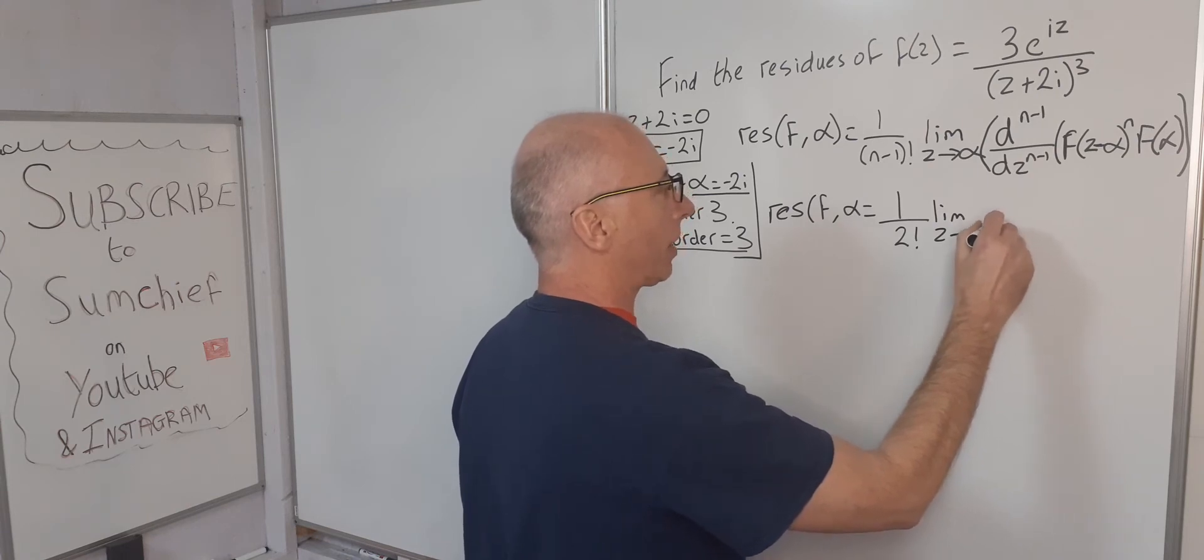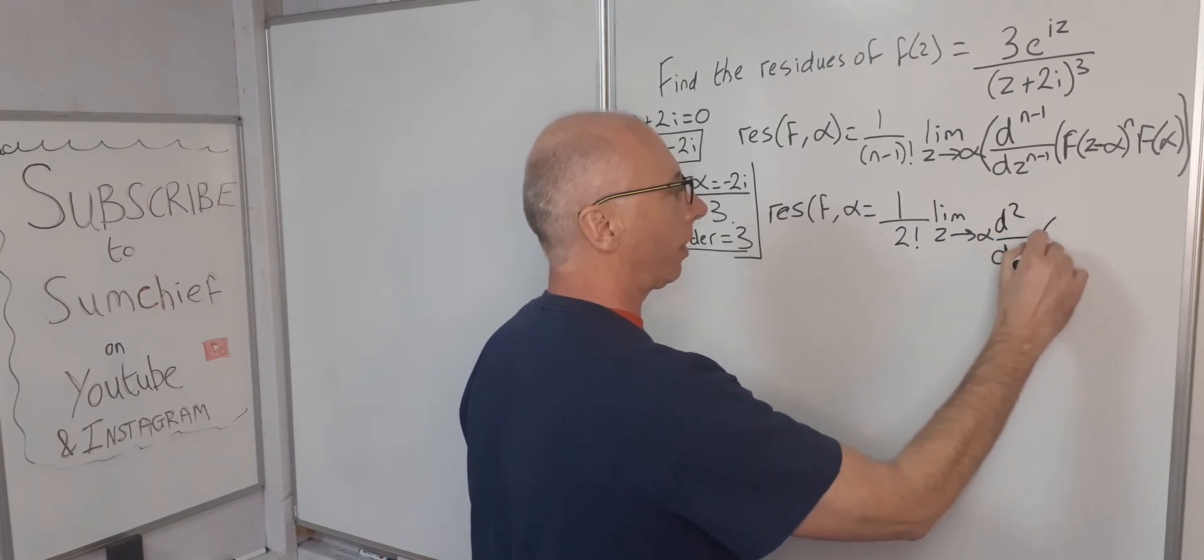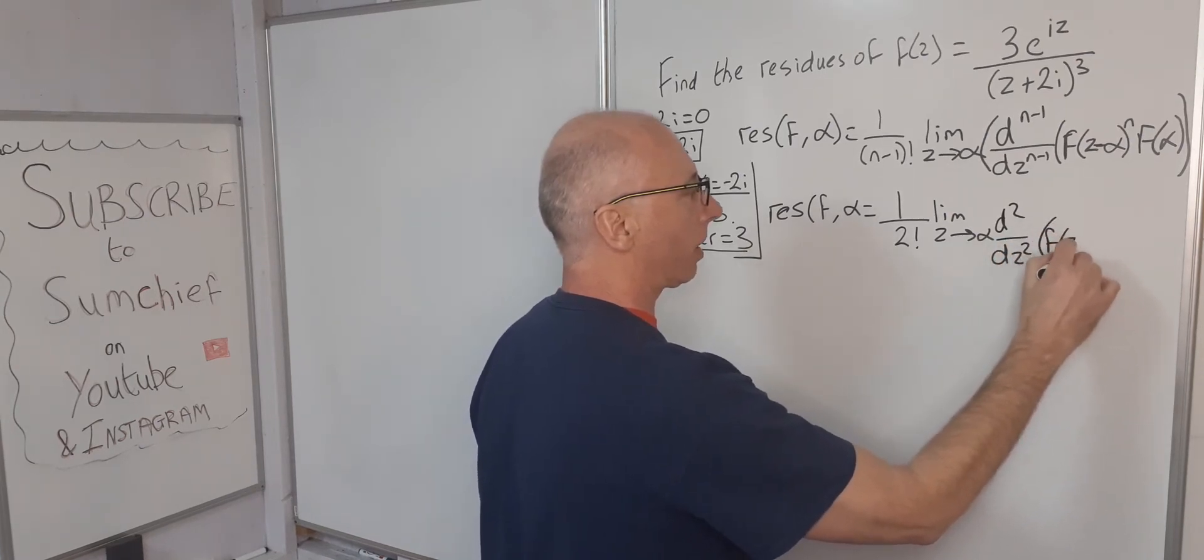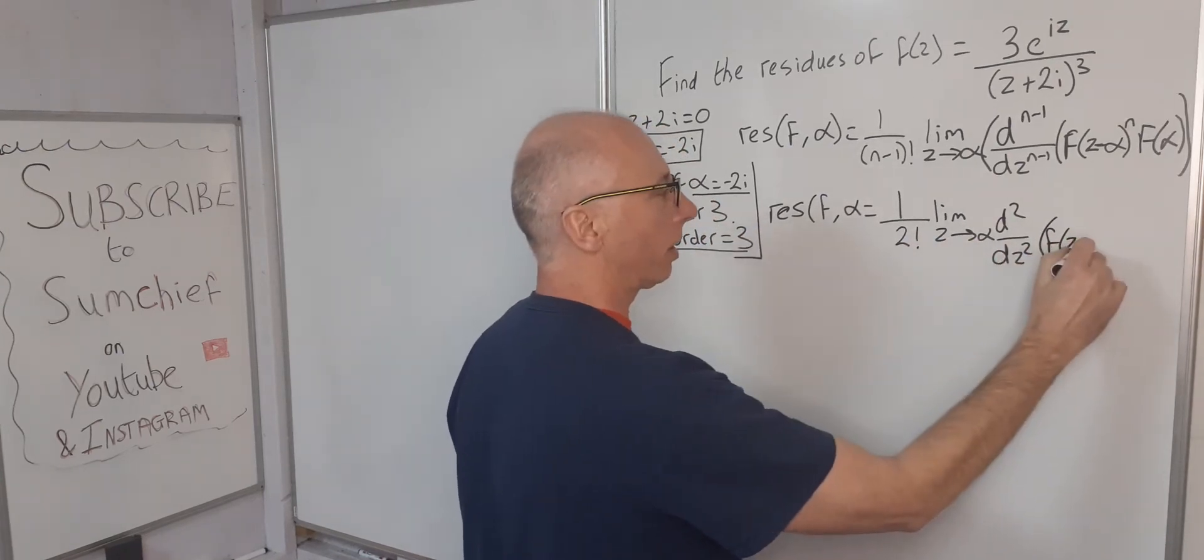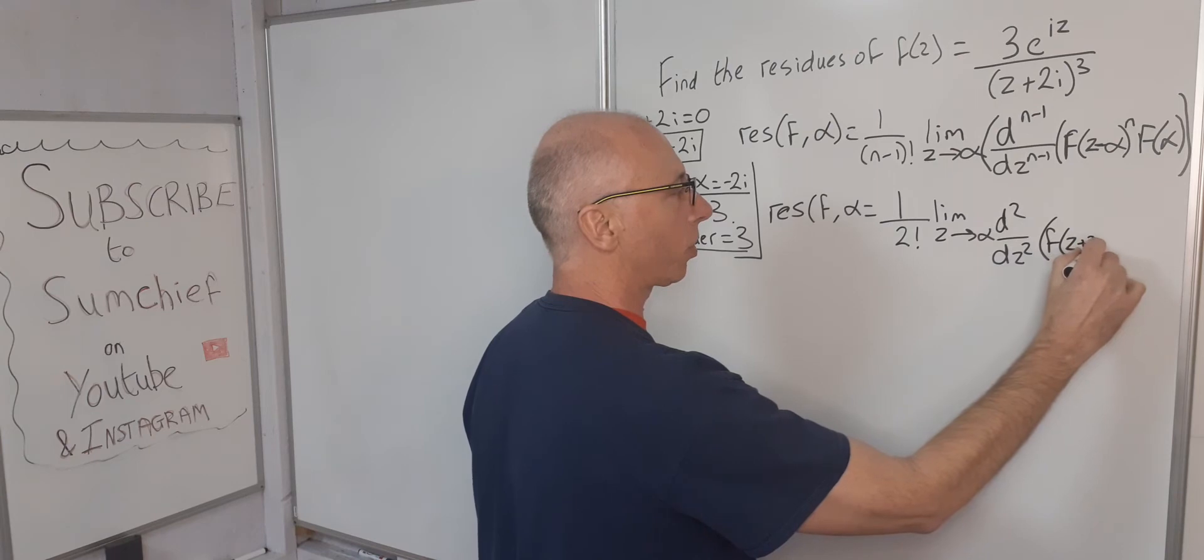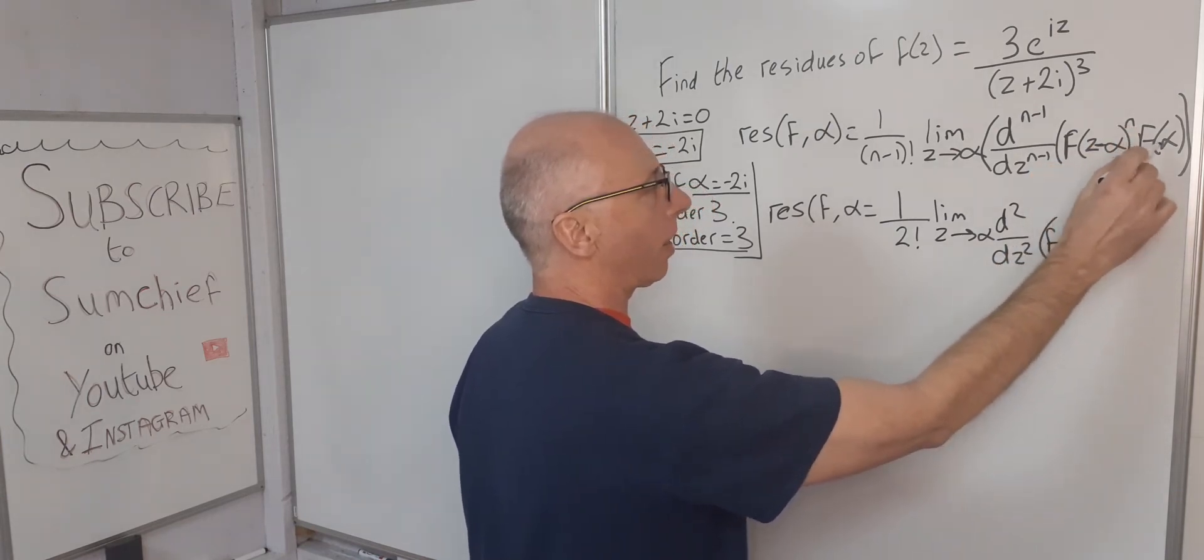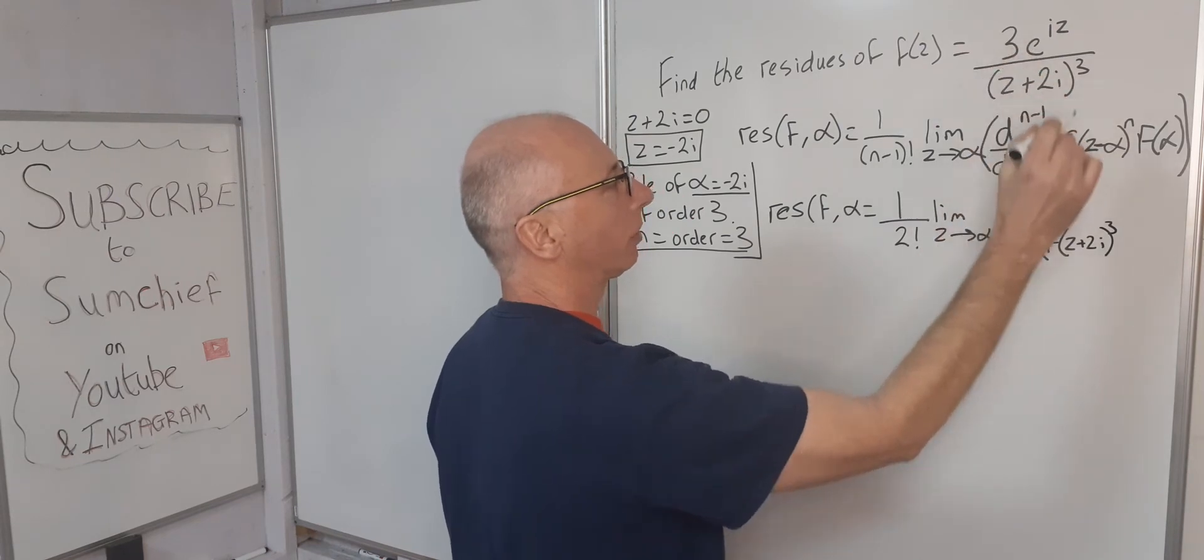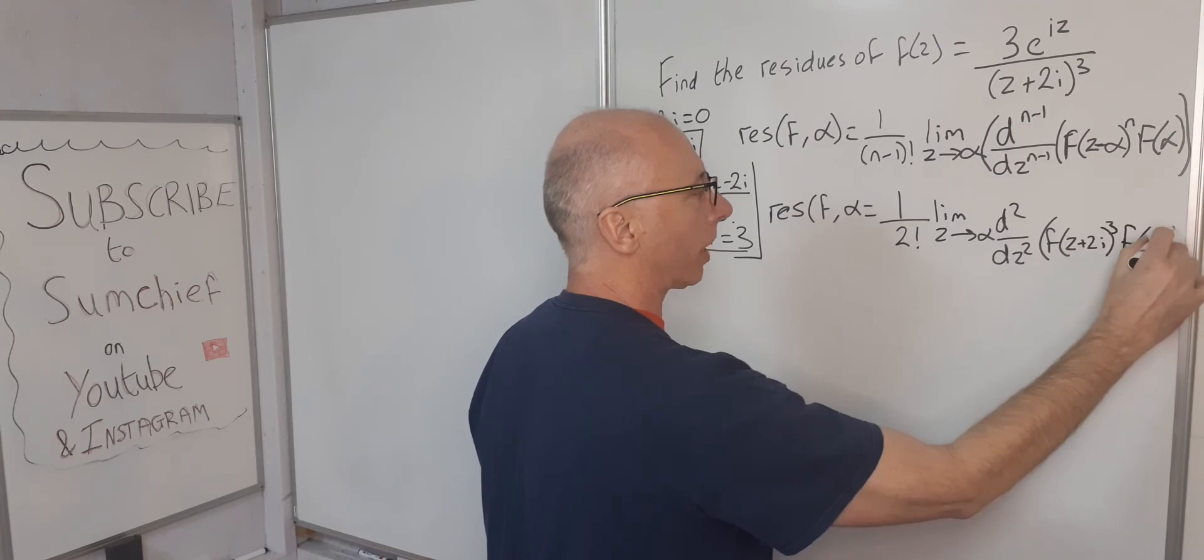So let's write that down as d²/dz² of [f(z) times (z + 2i)^n], which is cubed. And then our function at alpha, so f at -2i.